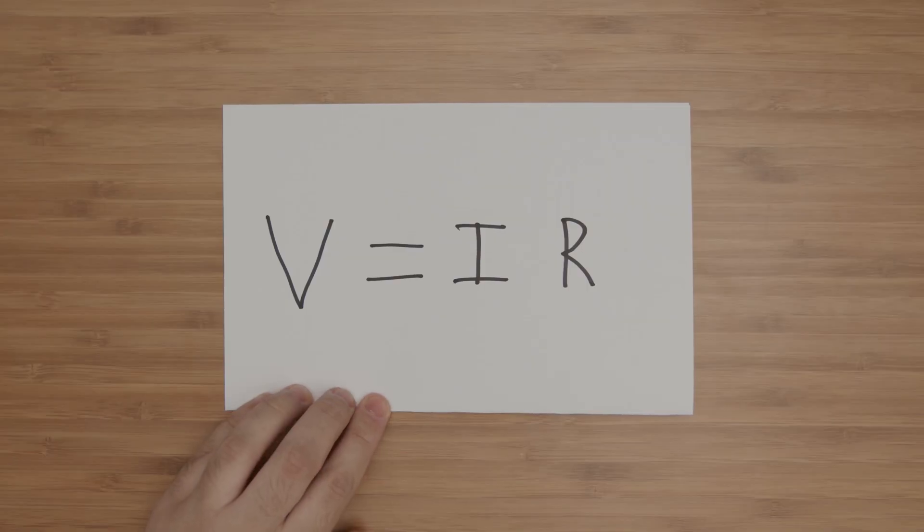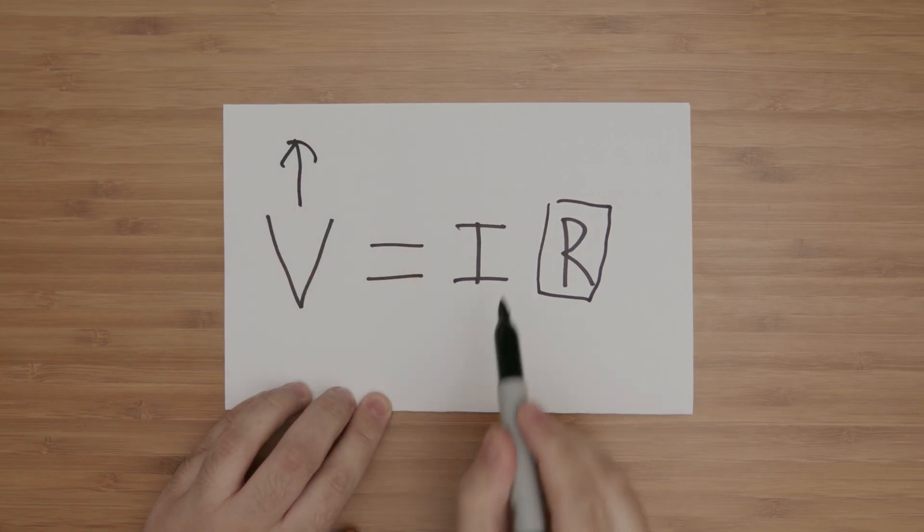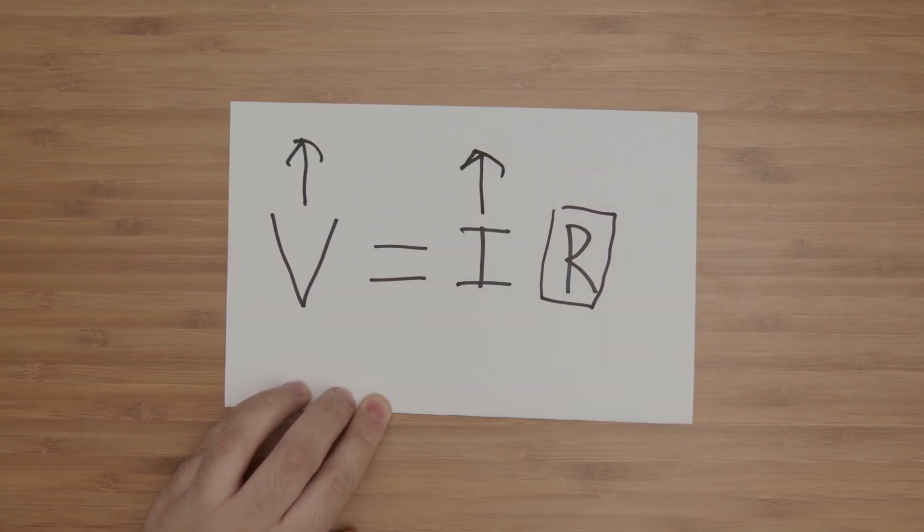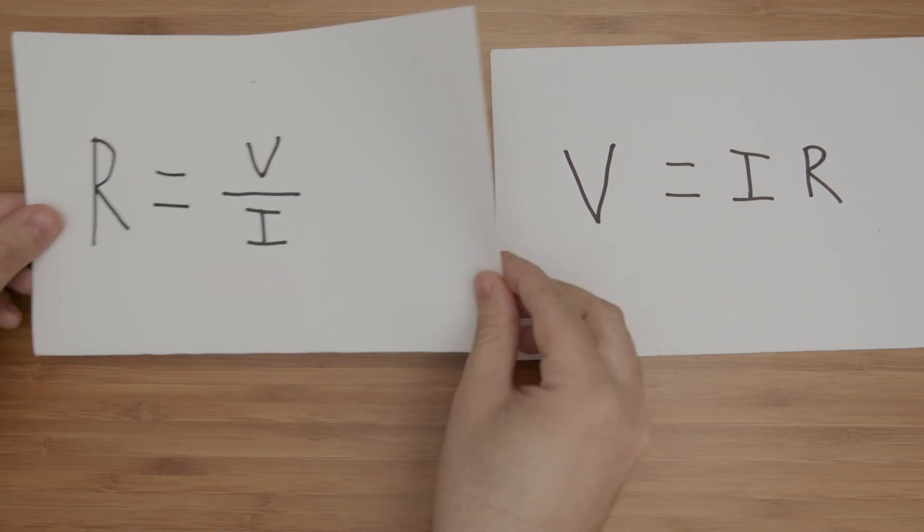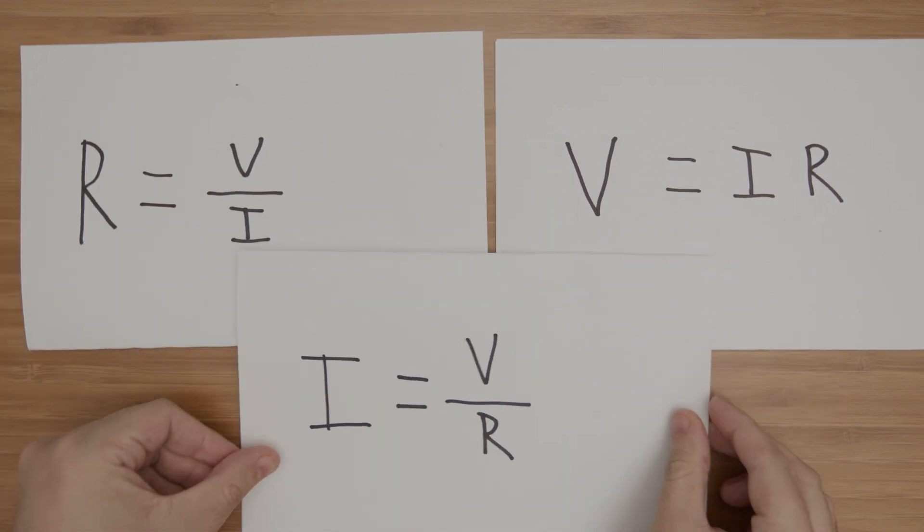The most beautiful thing about Ohm's law is that it defines the balance between voltage, current, and resistance. For example, if we have a fixed resistance and increase the voltage, the current will have to rise. We can also change this formula around to solve for any unknown given any of the other two values.